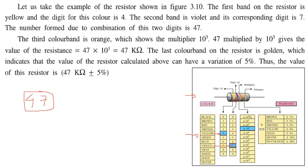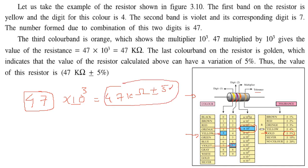The third colour band is orange, and the multiplier for orange is 10 to the power 3, which is kilo. So we multiply 47 by 10 to the power 3, giving 47 kilohm. The last colour band is golden, which indicates plus minus 5%, meaning the value of the resistor can have a variation of 5%. So the value of the resistor is 47 kilohm plus minus 5%. This is how, using the colour code, we can find out the value of a resistor.